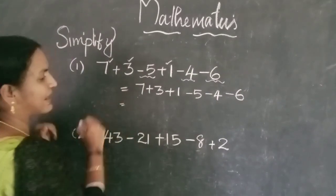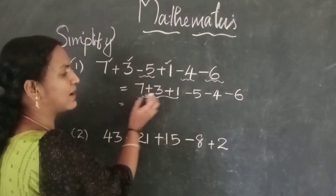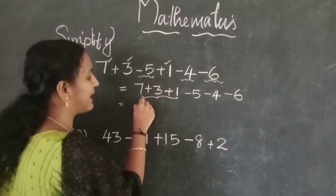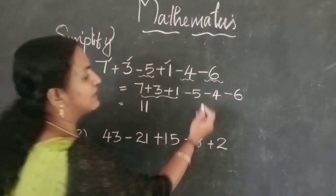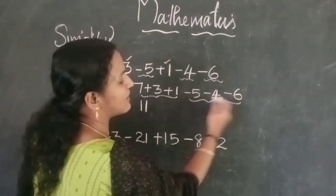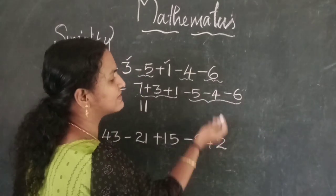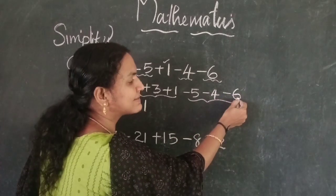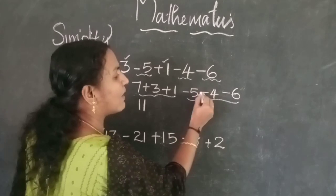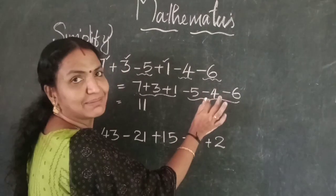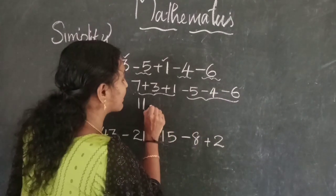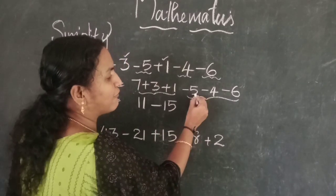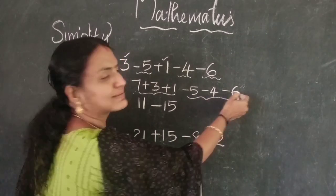Add the positive numbers: 7 plus 3 is 10, plus 1 is 11. These are all negative numbers, so add them: 5 plus 4 is 9, and 9 plus 6 is 15. The sign is negative, so write minus 15.